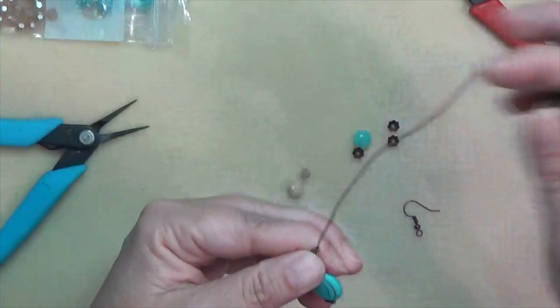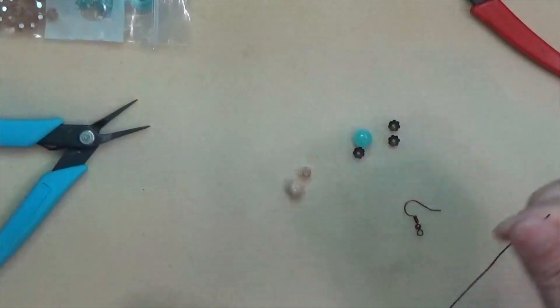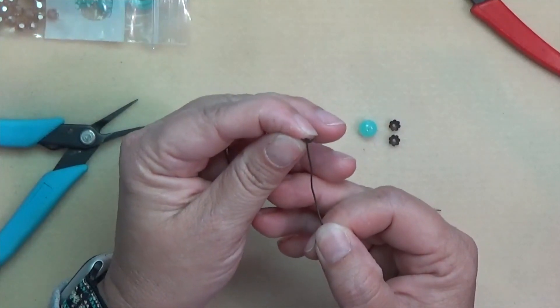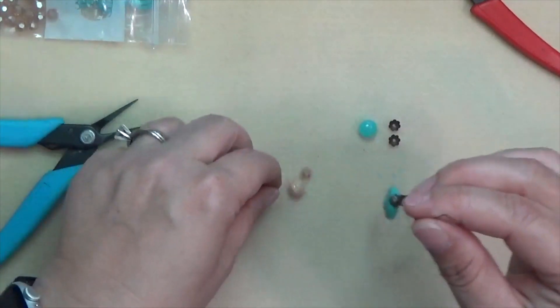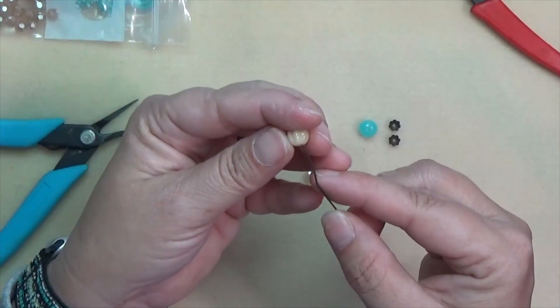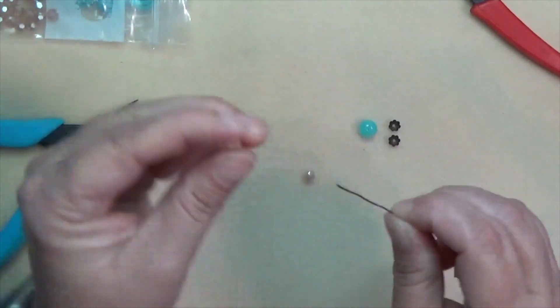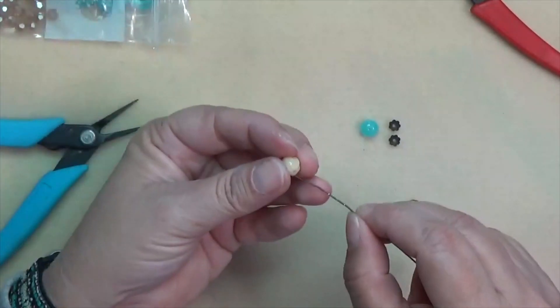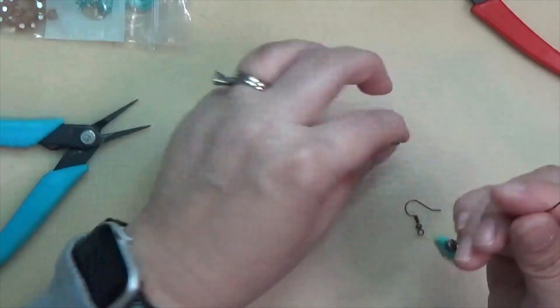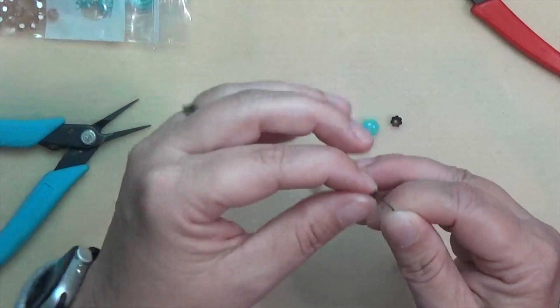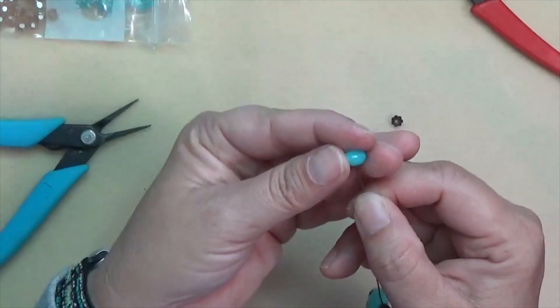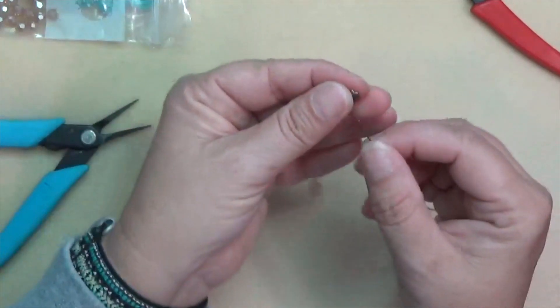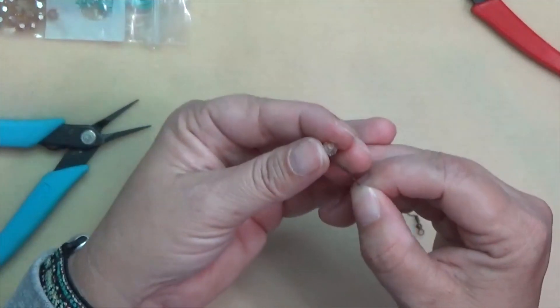I have that all nice and tight against there, and then I'm going to add another one of these bead caps. But this one's going to be cup up like so, and then we'll have our melon bead. My wire is just a scooch bent there.